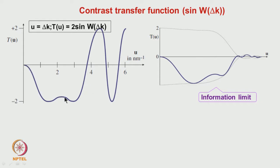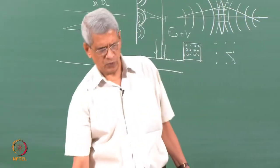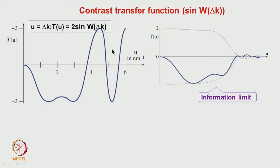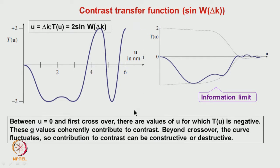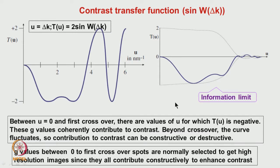In addition to spherical aberration and defocus, other aberration sources act as envelope functions: aperture effects, sample drift, and chromatic aberration. These cause the contrast transfer function to oscillate but then decay to zero at a spatial frequency called the information limit. Beyond this limit, higher g values do not contribute to the contrast in the high resolution image.